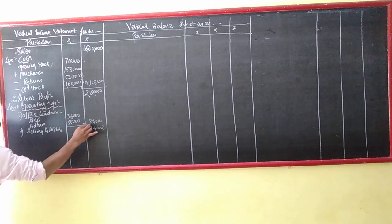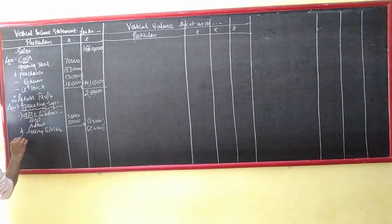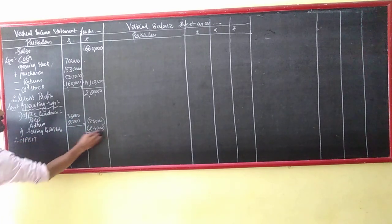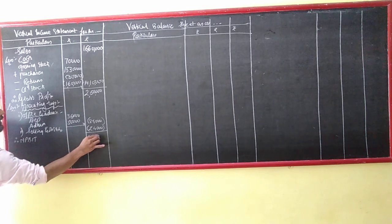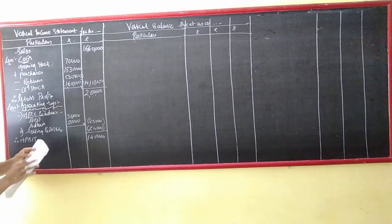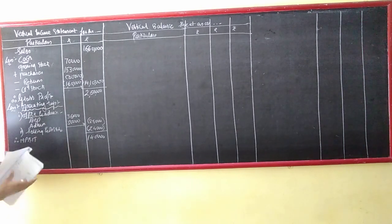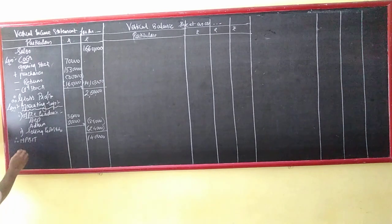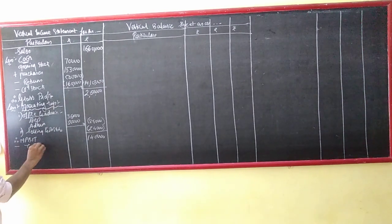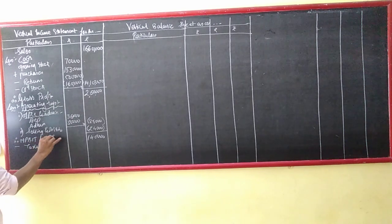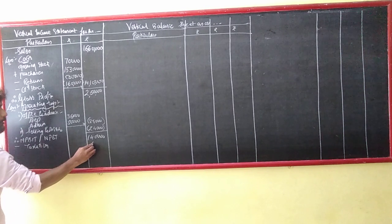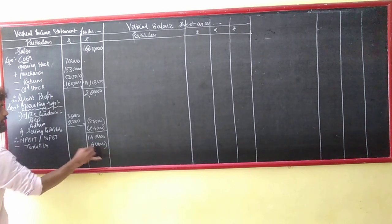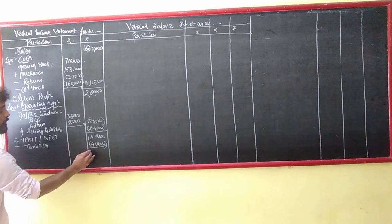24,000 minus. That means NPBIT will be 1,10,000 - so 1 lakh 40. NPBIT has been arrived at. Less accession - 20 plus many. So instead of this, we can also write NBBE. Accession: 14,000. Profit balance remaining - therefore NBBE.